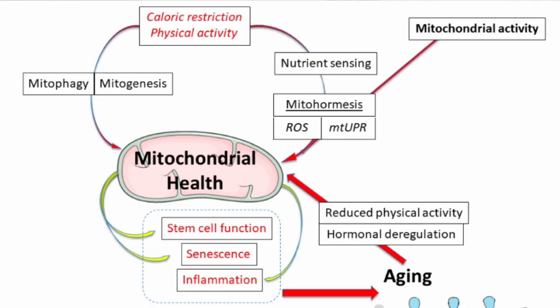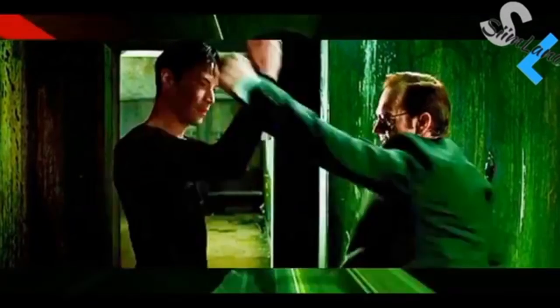An image here shows mitochondrial health: caloric restriction combined with physical activity leads to activation of mitophagy and mitogenesis, which leads to lower inflammation and better stem cell function. Better mitochondrial function is related to the ability to deal with reactive oxygen species and low-level inflammation. Reduced physical activity and deregulation of hormonal activity can lead to inflammation and premature aging.